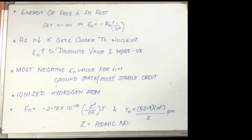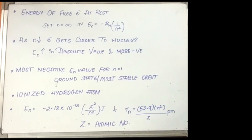The most negative energy value is given by n equal to 1. This is also known as the ground state or the most stable orbit of the hydrogen atom. When the electron is free from the nucleus, the energy is equal to 0, the principal quantum number is n equal to infinity, and this is called an ionized hydrogen atom. The presence of the negative sign in the equation depicts its stability relative to the reference state of 0 energy and n equal to infinity.